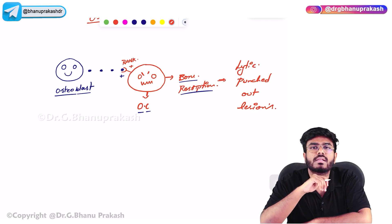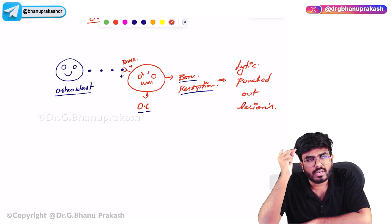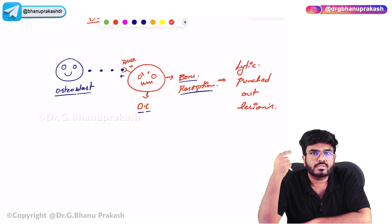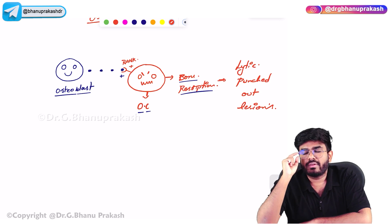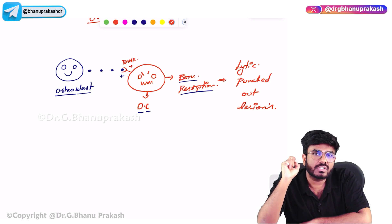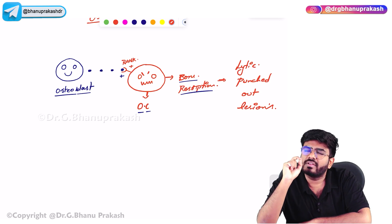These lytic punched-out lesions are seen on X-ray. When you see the skull, it will have small punched-out lesions — like holes made by a punching machine. Whenever you see lytic punched-out bone lesions, you should always think about multiple myeloma.